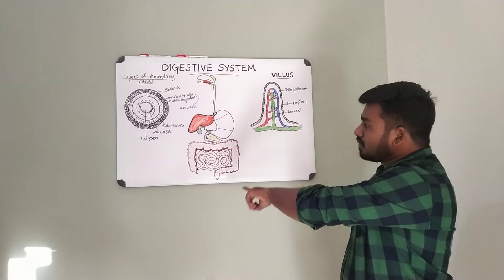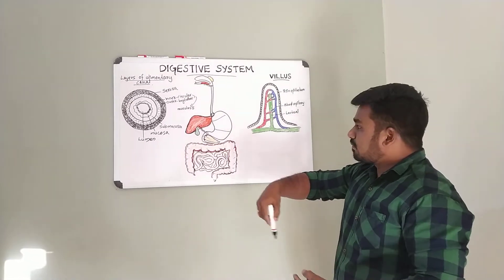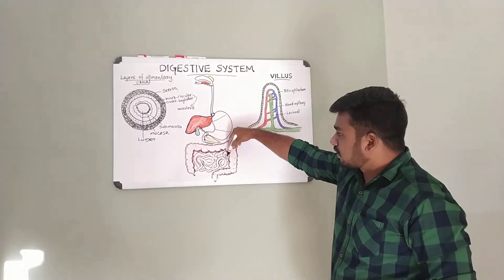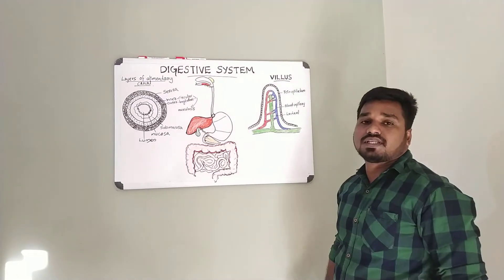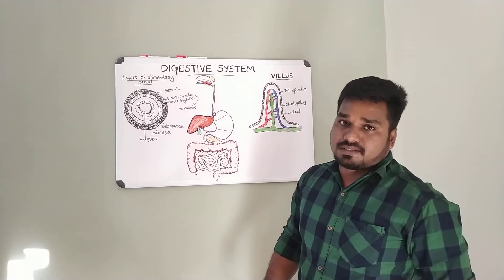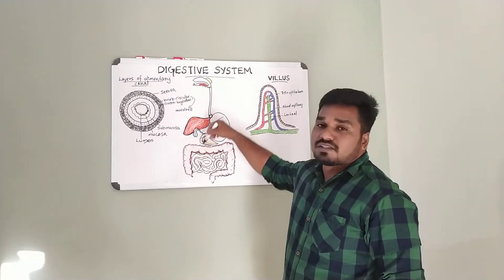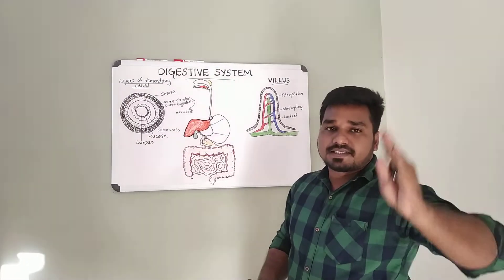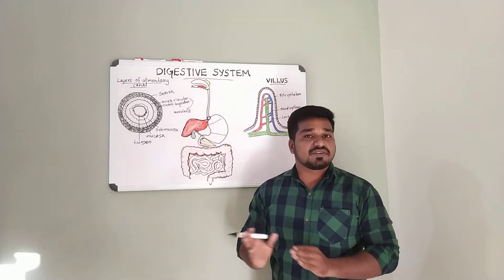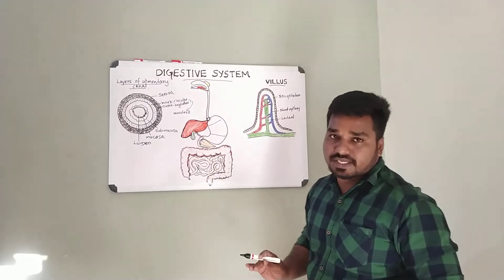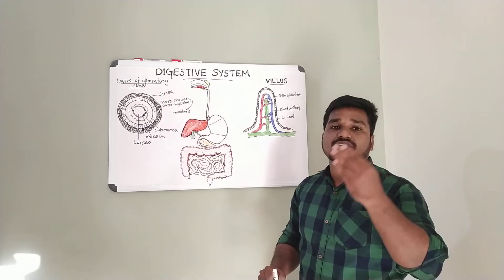In the stomach, gastric juice mixes with food to perform mechanical and chemical digestion. In the small intestine, pancreatic juice containing enzymes such as amylase, lipase, trypsinogen, and chymotrypsinogen is delivered to the duodenum. Pancreatic amylase breaks down carbohydrates into disaccharides, and further into monosaccharides via disaccharidase enzymes.